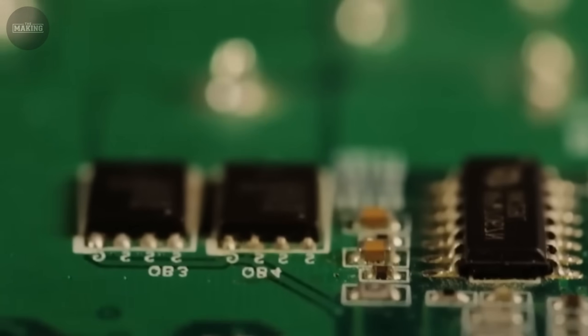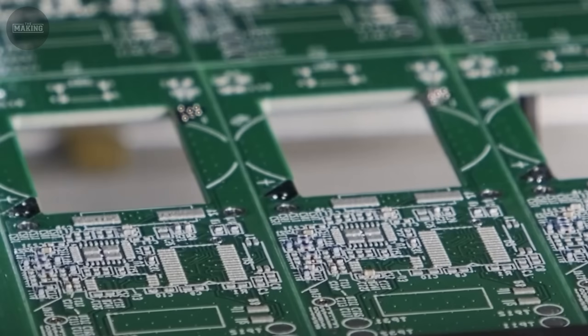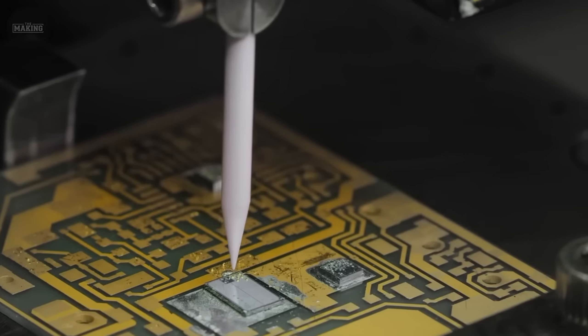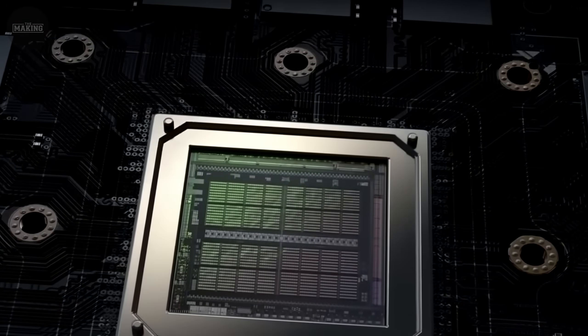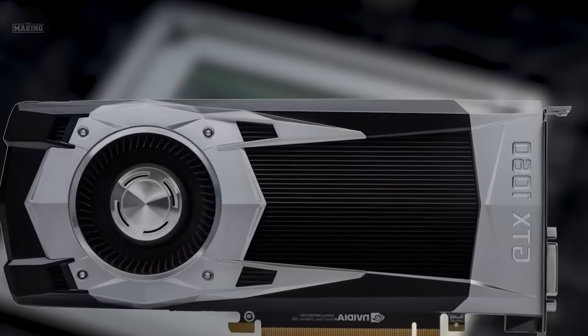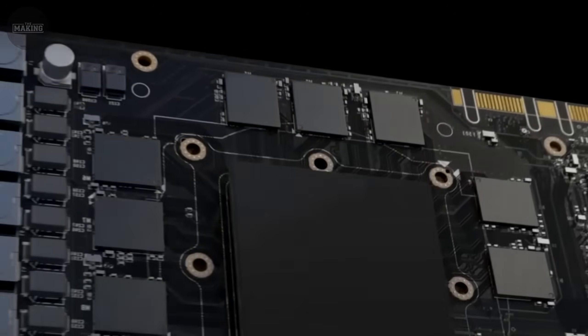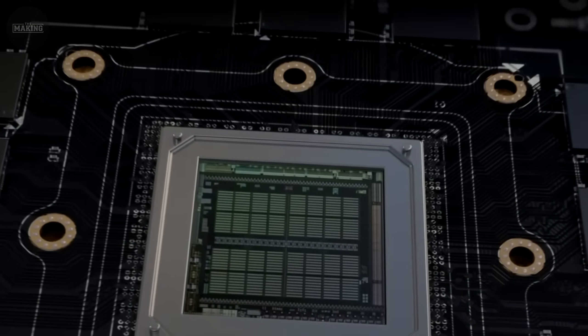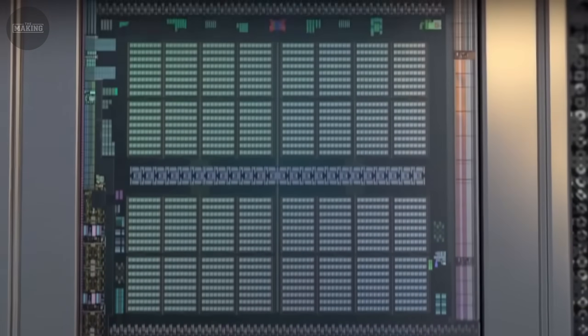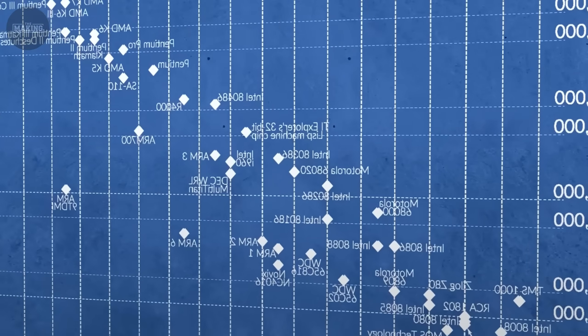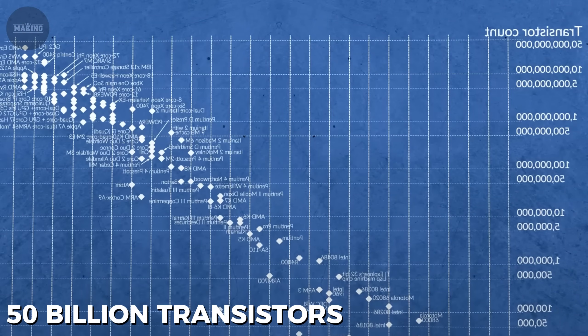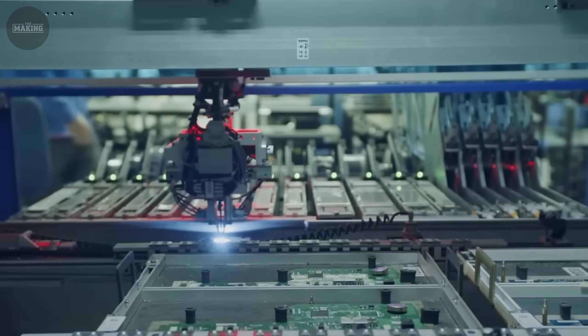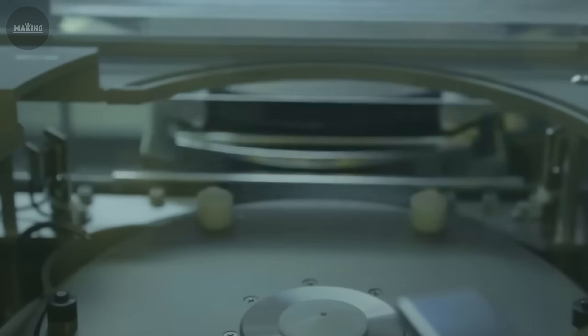Then comes deposition, where new materials get added one atom at a time. Copper for wires, tungsten for connections, and dozens of exotic elements most people have never heard of. Each deposition happens in ultra-high vacuum chambers, cleaner than outer space. The process repeats hundreds of times, building up microscopic skyscrapers of circuits. Computer systems monitor every step because humans cannot see or control processes this small. A modern AI chip contains over 50 billion transistors in an area smaller than your thumbnail. Each transistor switches on and off trillions of times per second without wearing out.